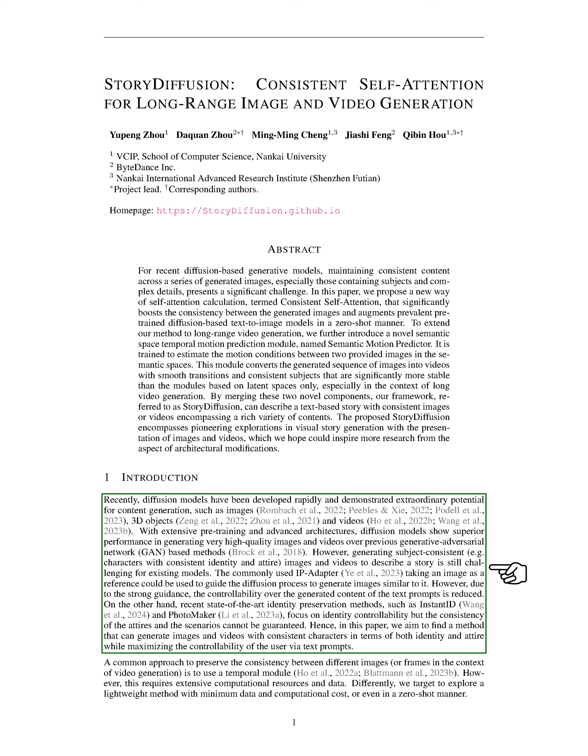In this section, we will discuss the recent advancements in diffusion models for content generation, such as images, 3D objects, and videos. These models have shown great potential in creating high-quality content compared to previous methods like generative adversarial networks (GANs).